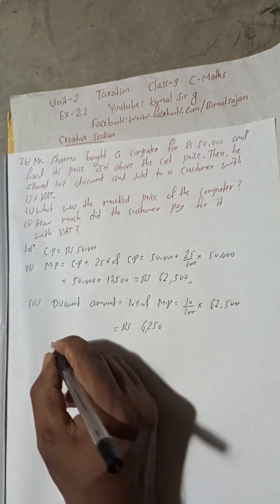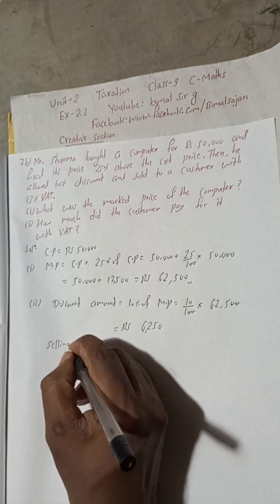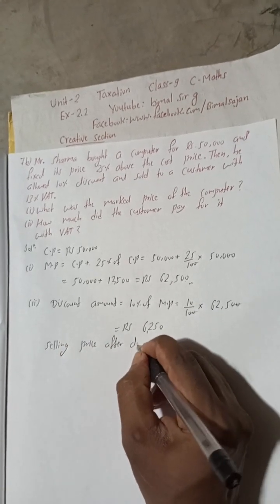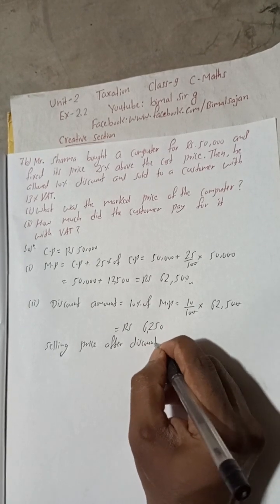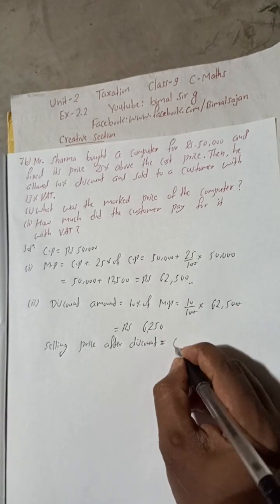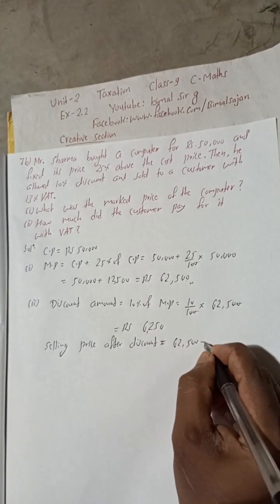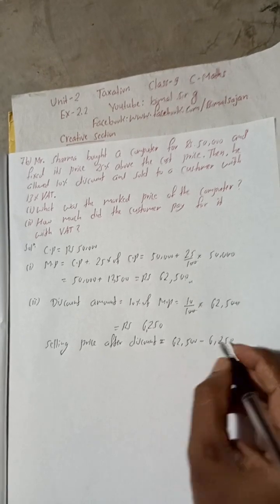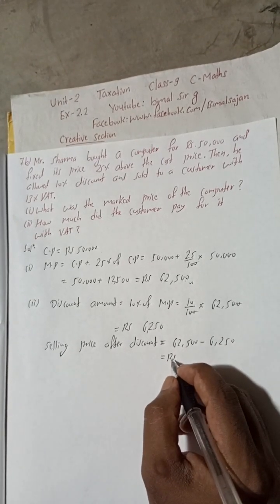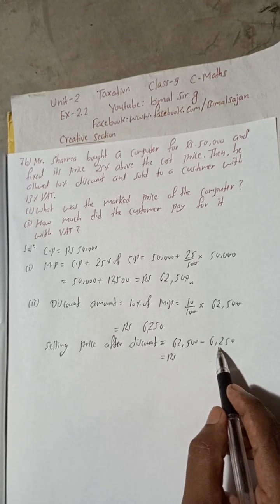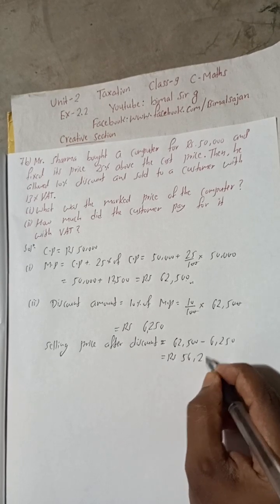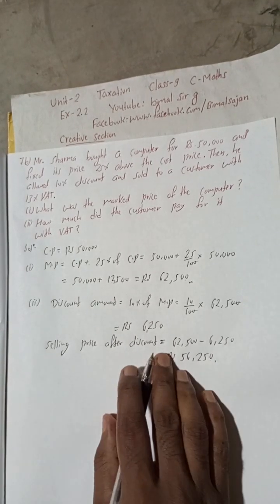Now we find the selling price after discount. Selling price after discount equals marked price minus discount: 62,500 minus 6,250. When you subtract this you get Rs. 56,250. So the selling price after discount is Rs. 56,250.